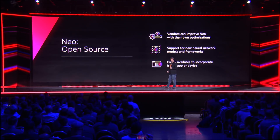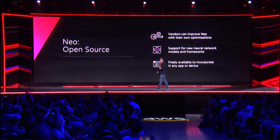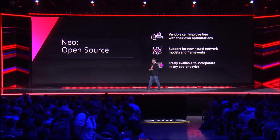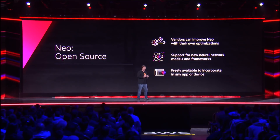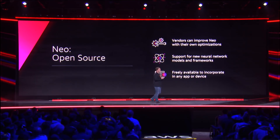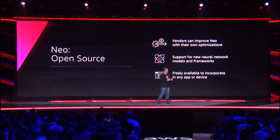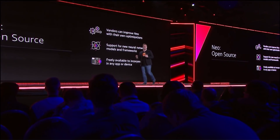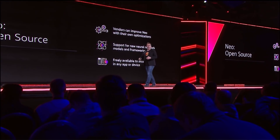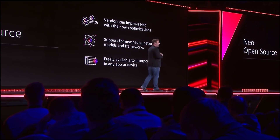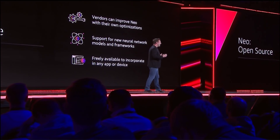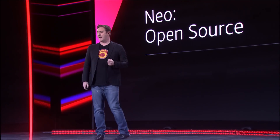Today, we're also going to make Neo open source. What this means is that other vendors can take the deep learning compiler and the associated runtime and add their own optimizations. It means that as new neural networks become available, they can just start getting added in real time to the compiler and to the runtime. And it means that it's free to incorporate in any app for any device.